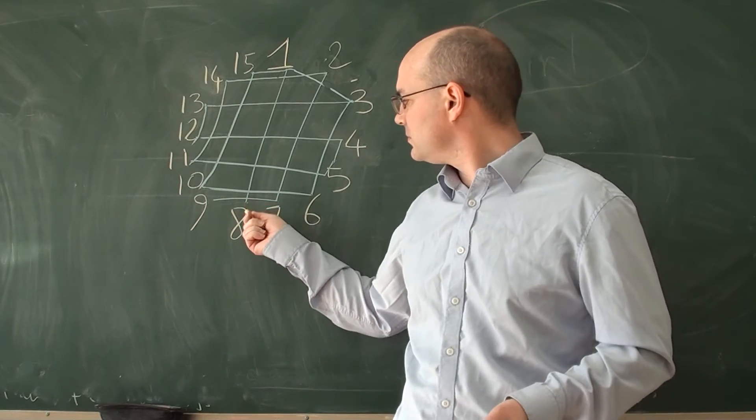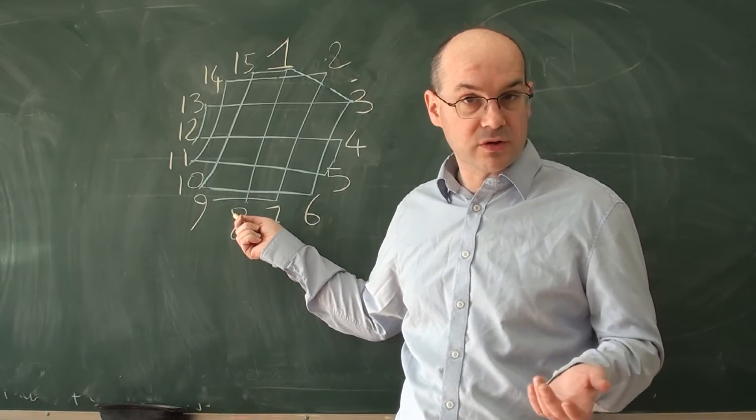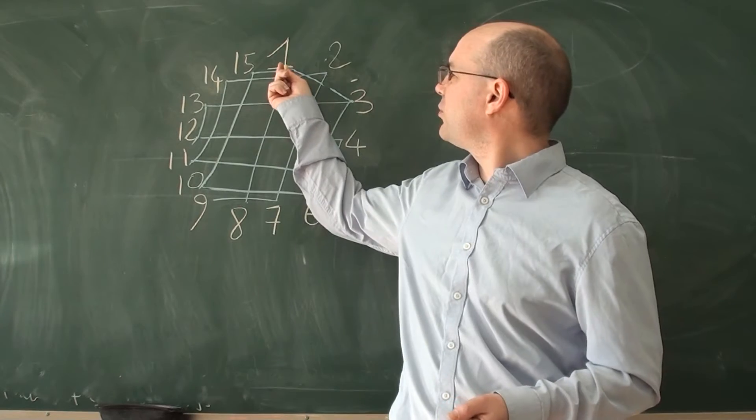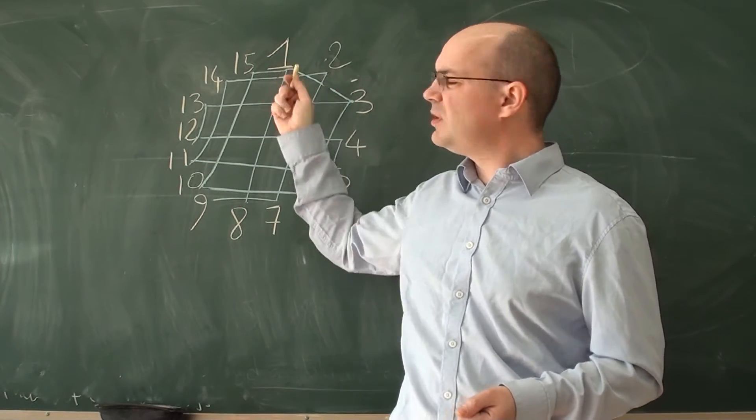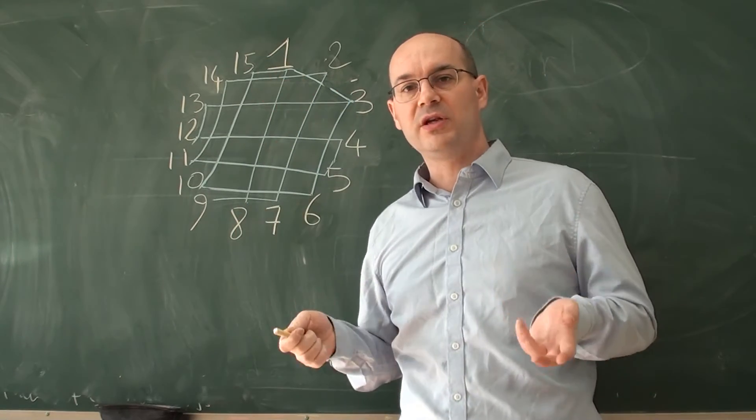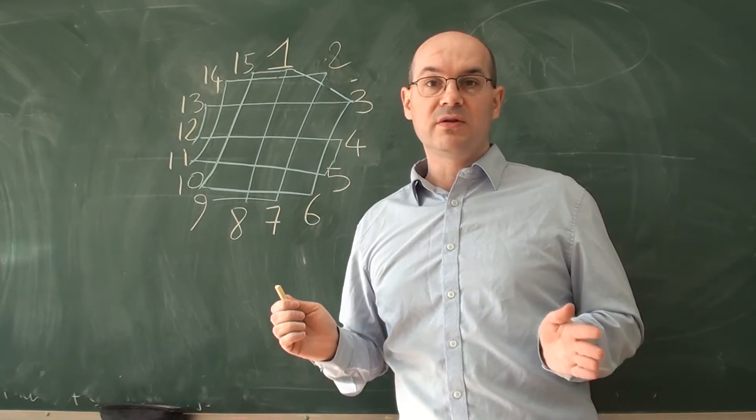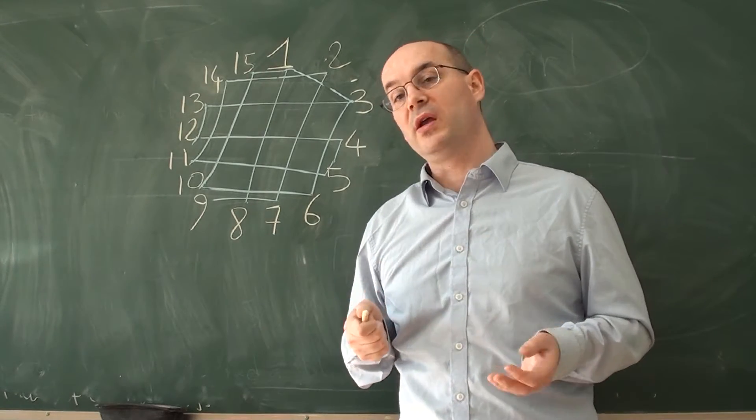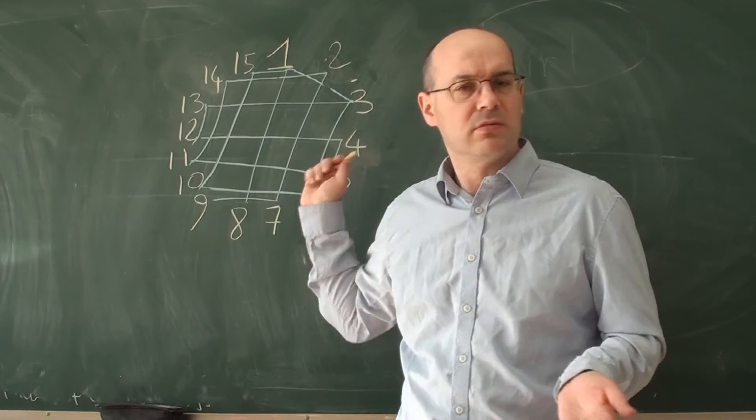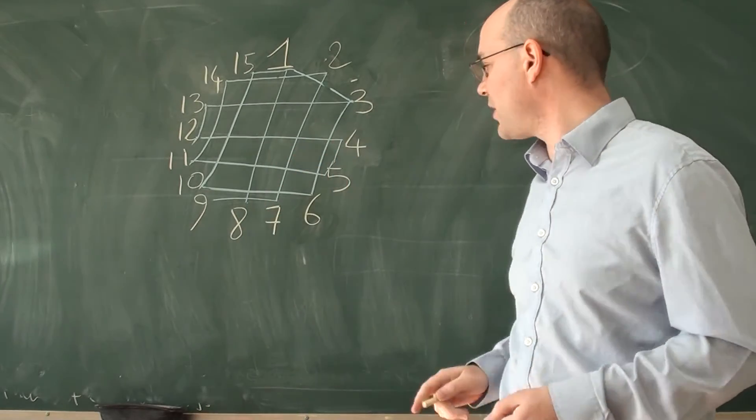If we start by 8 to find the solution, we realize that we reach 1 and then we have 2 different possibilities and it gets really intricate. So to find the solution the easiest way, it's better to start by 9 because we don't have any choice.